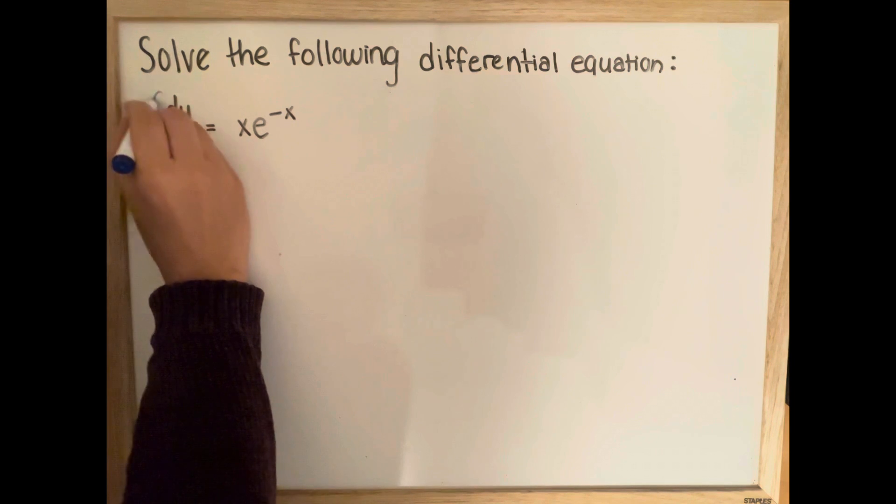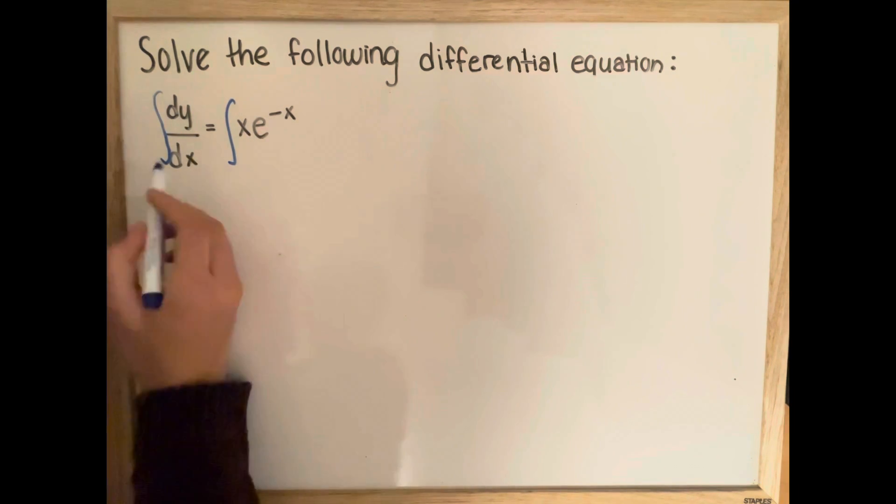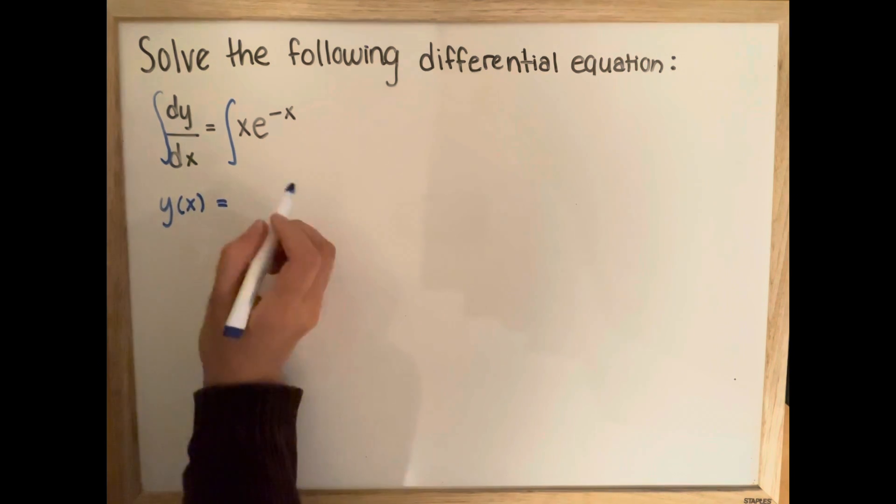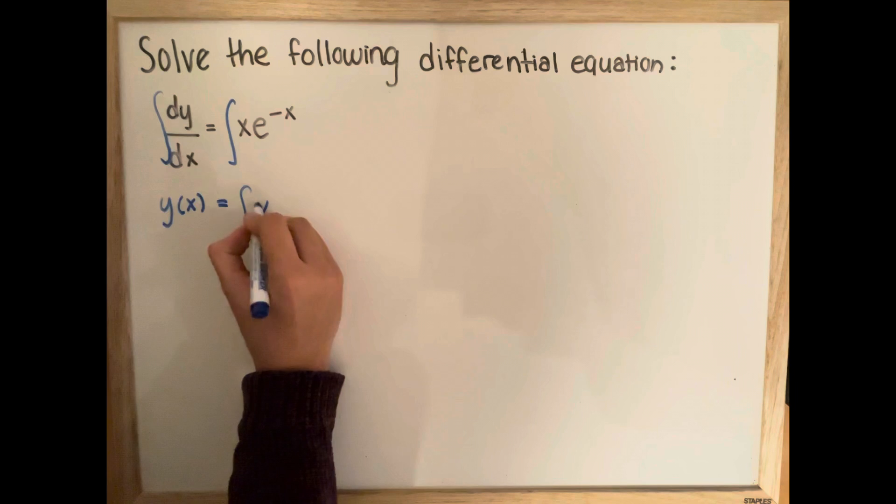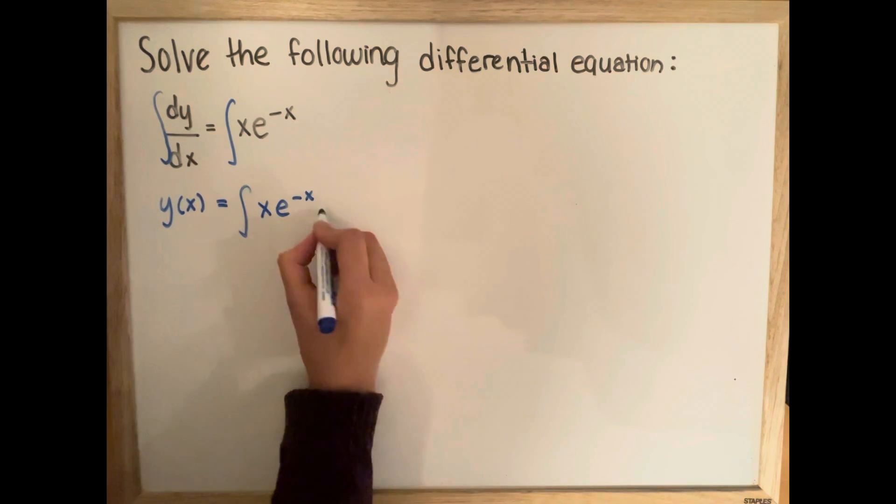So we're going to take the integral of both sides, and the left side is going to be y of x, and this dx is going to move to the other side, so we're going to have x multiplied by e to the power of negative x dx.